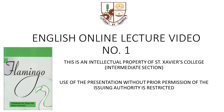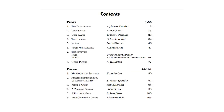Hello everybody, this is English online lecture video number one. This is an intellectual property of San Xavier's College Intermediate Section. Use of the presentation without prior permission of the issuing authority is restricted. The book selected today is Flamingo, a textbook for class 12 core course. We will be taking up the poetry section. The first one is Aunt Jennifer's Tigers, found on page 103 of the main text.